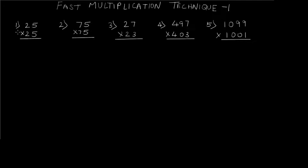As you can see on the screen, we are going to be solving five different problems. The first three problems are two-digit numbers. The fourth one is a three-digit and the fifth one is a four-digit multiplication problem. Let's start with the first question.